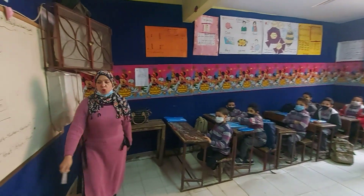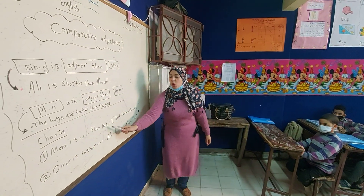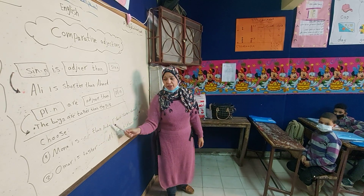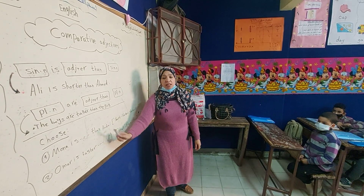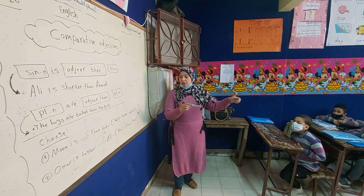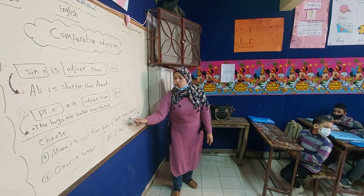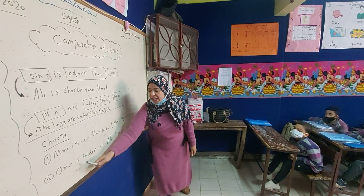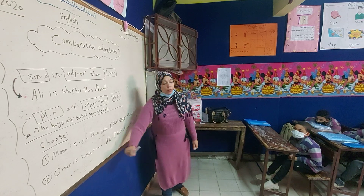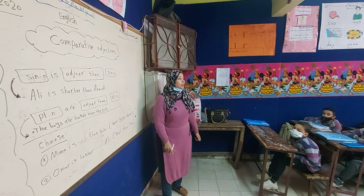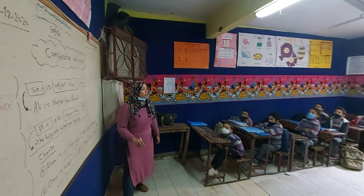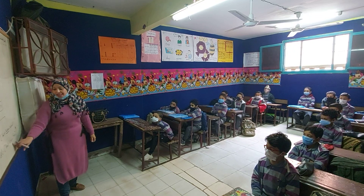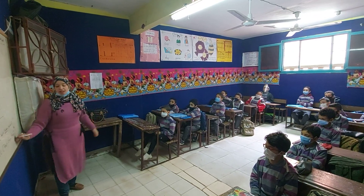Let's practice. Choose number one: Mona is ___ than Nada. The choices are short, shorter, shortest. Where is the key answer? The word 'than' tells us to choose the comparative form — adjective plus '-er.' So the answer is 'shorter.' Number two: Omar is faster than Ali. The key answer again is 'than,' so we choose the comparative form: faster. Then. Excellent.